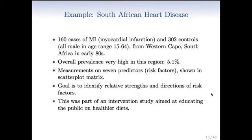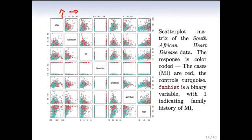In this case we're not really trying to predict the probability of getting heart disease. We're trying to understand the role of the risk factors in the risk of heart disease. Actually, this study was an intervention study aimed at educating the public on healthier diets, but that's a whole other story. I think it might have worked a little bit, but this crowd is really hard to get them away from their meat. You know what they call a barbecue in South Africa? Braai. Every South African loves a braai.